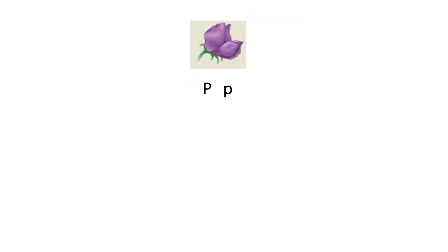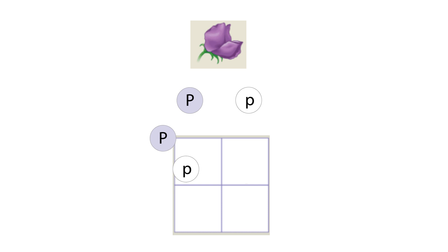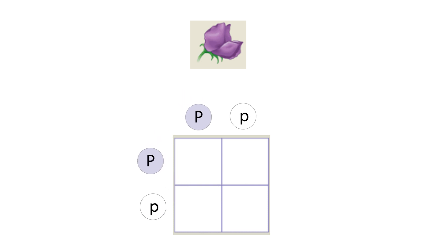Fourth, the two alleles for a character segregate during gamete formation and end up in separate gametes. Crossing the F1 generation produces all the possible combinations of these two alleles.